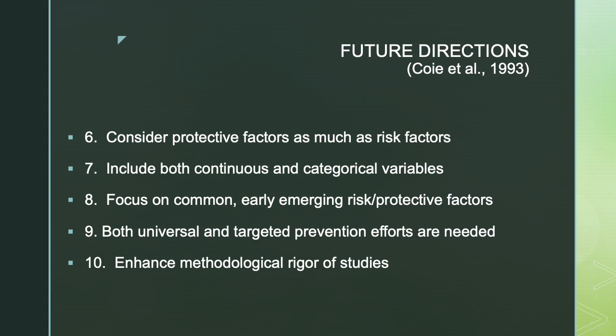Another future direction is to focus on common early-emerging risk and protective factors so that you can impact many more outcomes, and to focus on both universal and targeted prevention efforts. Universal efforts are things you do for everyone in the general population, putting out a small dose for everybody to benefit from — for example, a public service announcement about exercise or diet for heart disease. Targeted prevention efforts are usually more intense and are focused on specific risk groups at heightened risk for the problem, getting right to the dynamics that are increasing risk for that subpopulation.